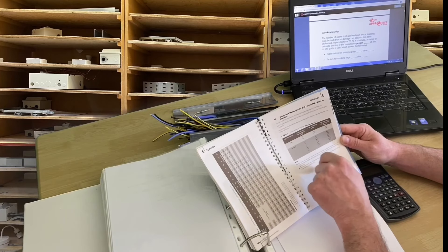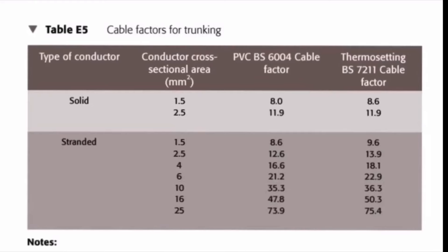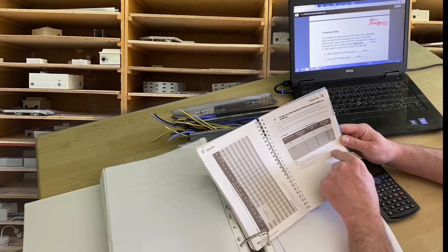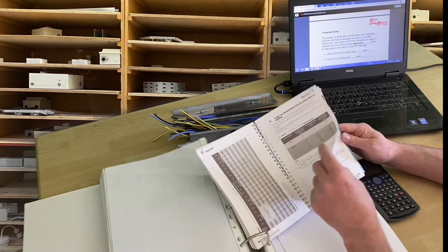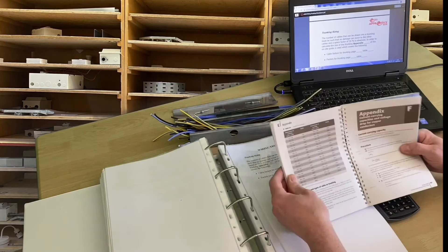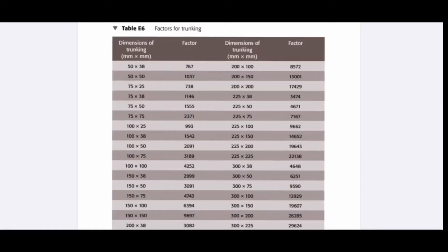For these notes I'm going to be concentrating on the stranded section and on the thermoplastic PVC — BS6004 cables. That's where we get the factor for the cables themselves, exactly the same as we did in conduit. We then turn over to the next table, which is table E6 — the factors for trunking.